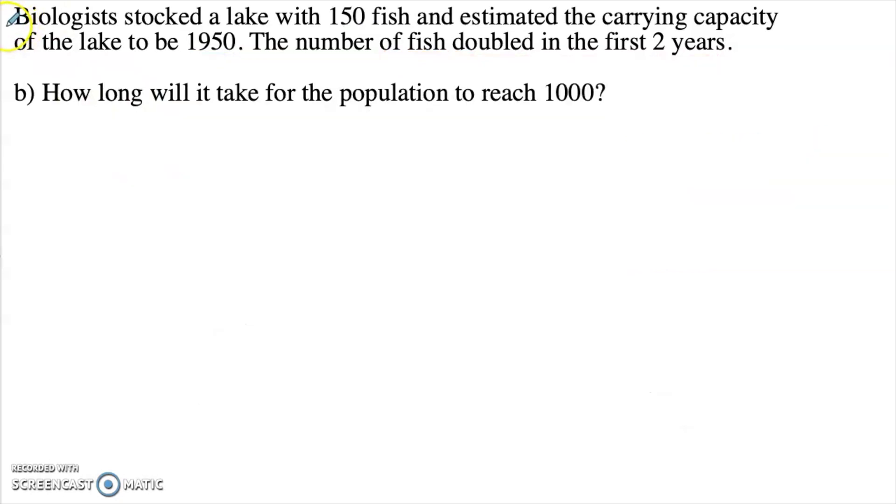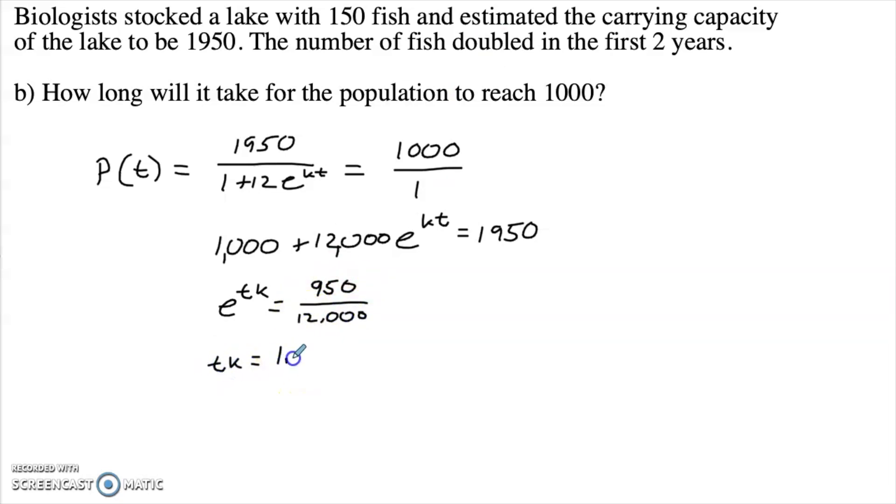Part B says how long is it going to take for the population to reach 1000? I don't know what time is, so p of time. I'm just going to set it equal to 1000 and then cross multiply and solve for t. 1000 plus 12,000 e^(kt) equals 1950. e^(tk) equals 950 over 12,000. tk is the natural log of 95 over 1200. And then t is 1 over k times the ln of 95 over 1200. Again, that k is stored in my calculator, so I can just go ahead and type that in the way it looks. And I'm going to get about 6.5 years.